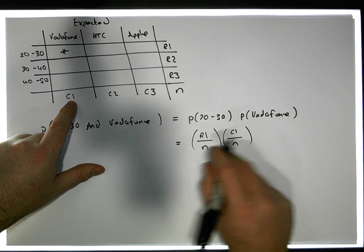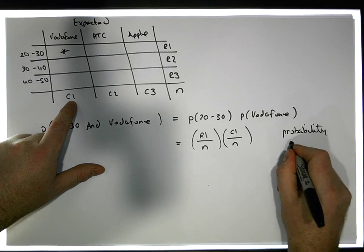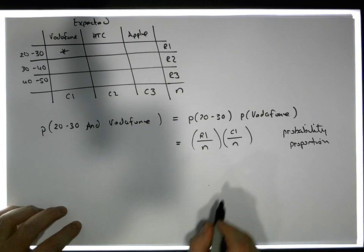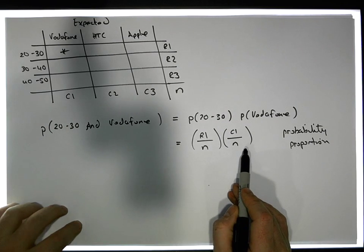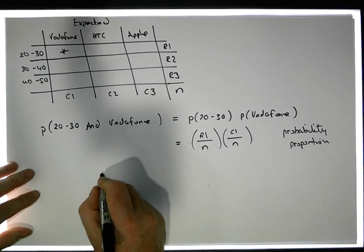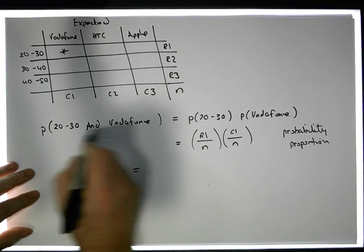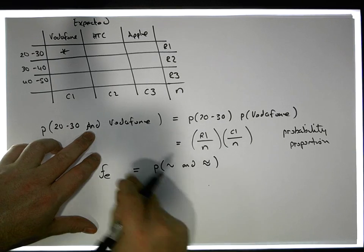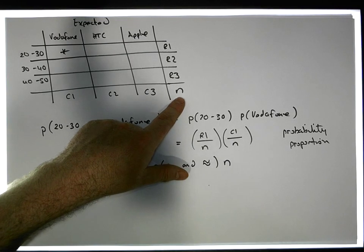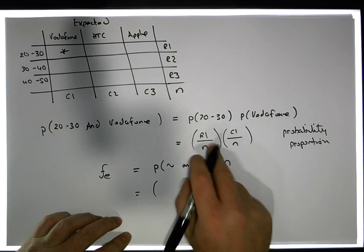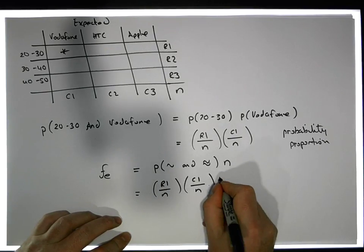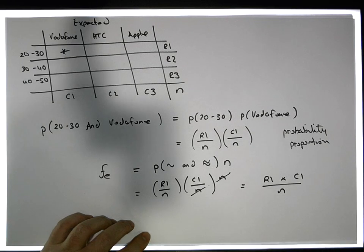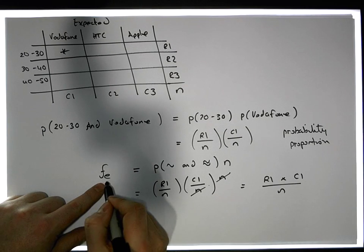This gives us the proportion we'd expect. What we really want to calculate is the expected frequency. If the variables are independent, we take that proportion of the total number of observations. So the expected frequency equals (r1/n) × (c1/n) × n, and the n's cancel, giving us row 1 total times column 1 total, over the total number of observations.